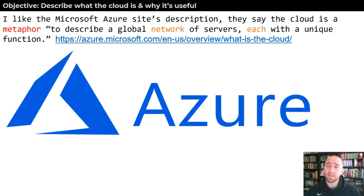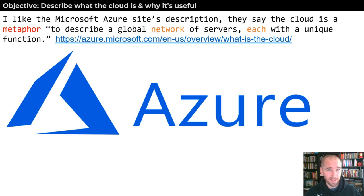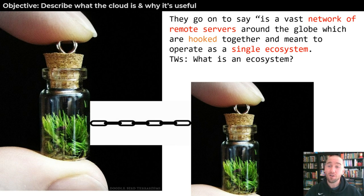Azure says that the cloud is a metaphor to describe a global network of servers, each with a unique function. This is a network of networks in that sense. If a server is what you need to have a network because your computer talks to the server, and we have a global network of servers — that's all it is. They go on to say it's a vast network of remote servers around the globe, hooked together and meant to operate as a single ecosystem.